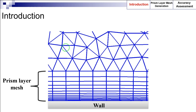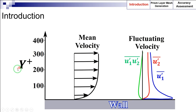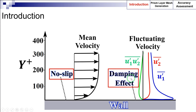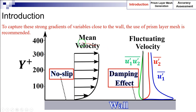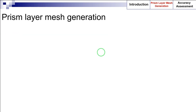To understand the importance of the prism layer mesh, note that when a fluid is flowing close to a wall, strong gradients are imposed on the mean and fluctuating velocity components, as schematically shown here. Here, y+ is the non-dimensional wall distance. These strong gradients are the result of both the no-slip boundary condition at the wall, which imposes zero velocity at the surface, and the wall damping effect on turbulence, which causes velocity fluctuations to go to zero at the wall. Therefore, to accurately capture these strong gradients close to the wall, the use of a prism layer mesh is recommended.